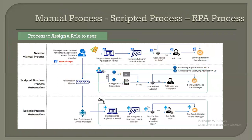I've kept a simple slide to help you understand how the manual process works to assign a role to a user, how script-based business process automation works, and how it works with a robot in place. The implementation process for script-based process automation is very time-consuming because you need to develop a lot of code and interact with applications using XML and APIs. In contrast, the robot is a really simple process — just drag and drop — and the robot interacts with applications much faster.